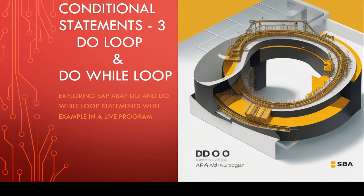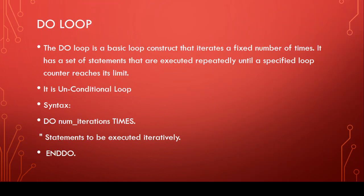Let's have some theory of DO loop and DO WHILE loop. First of all, DO loop is a basic loop construct that iterates a fixed number of times. It has a set of statements that are executed repeatedly until a specified loop counter reaches its limit.